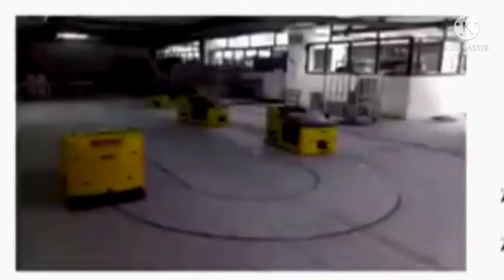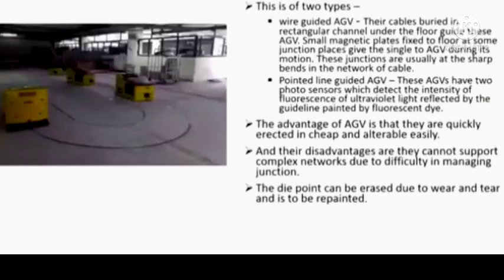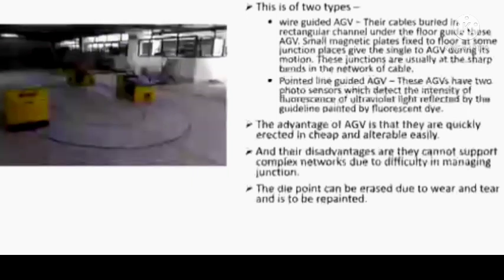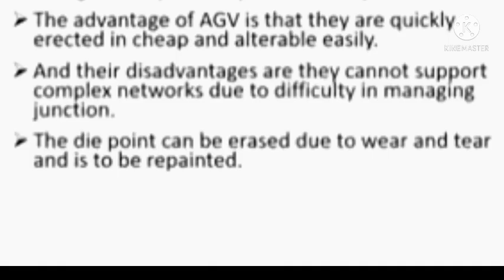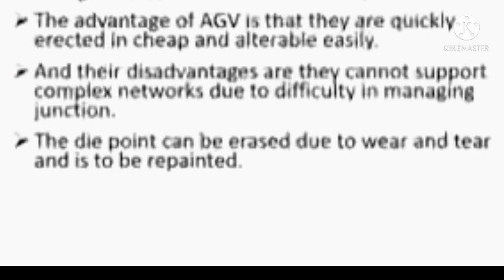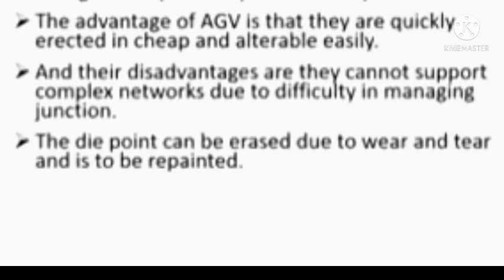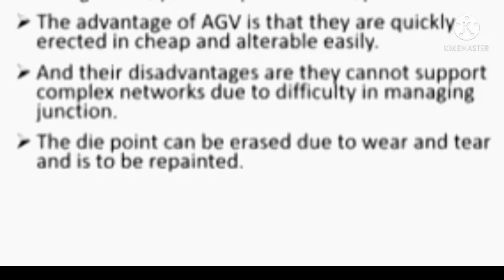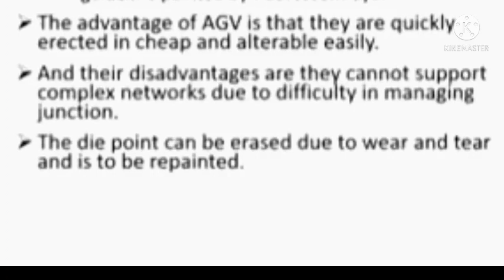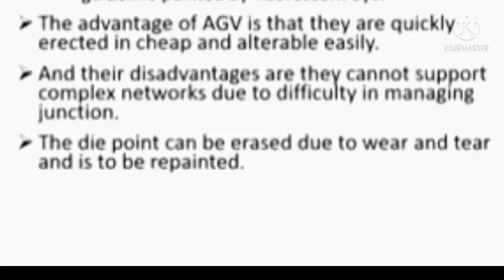Wire guided AGV: cables are buried in a rectangular channel under the floor to guide these AGVs. Small magnetic plates fixed to the floor at junctions give signals to the AGV during its motion. These junctions are usually at sharp bends in the network of cables. Paint line guided AGV: these AGVs have two photo sensors which detect the intensity of fluorescence of ultraviolet light reflected by guidelines painted with fluorescent dye. Advantage: they are quick to reroute, cheap and easily alterable. Disadvantage: they cannot support complex networks due to difficulty in managing junctions, and the painted dye can be erased due to wear and tear and must be repainted.